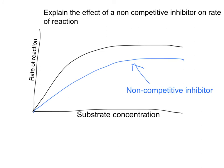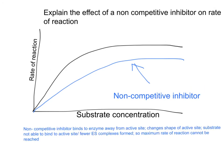Explaining the effect of a non-competitive inhibitor on the rate of the reaction, you need to tell the examiner that the non-competitive inhibitor is a molecule or substance that binds to the enzyme but away from the active site. When it binds to the enzyme, it changes the shape of the active site. This means that the substrate is not able to bind to the active site — effectively, there are fewer active sites available for the substrate to bind, so the maximum rate of reaction, or Vmax, cannot be reached. These are your key mark points.